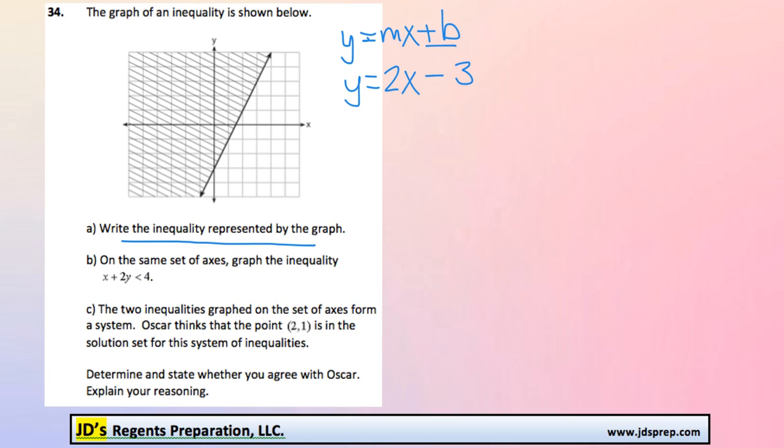Okay, next thing we need to do is, on the same set of axes, graph the inequality x plus 2y is less than 4. So to graph that, we're going to need to rewrite it and isolate y by itself.